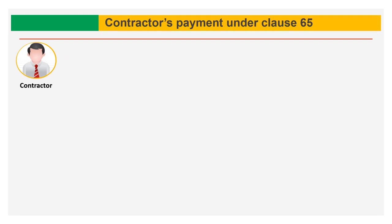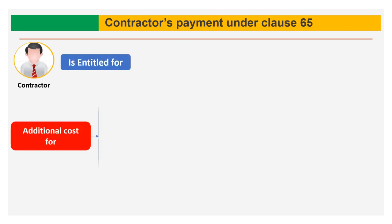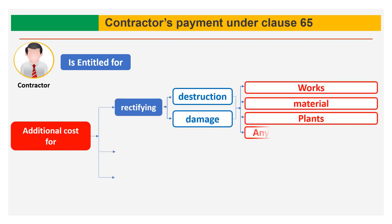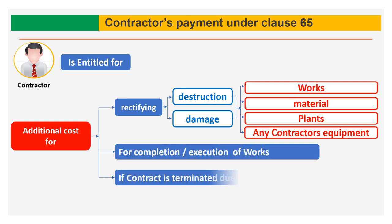In summary, under Clause 65 the contractor is entitled for the following payments: first, for rectifying destruction and damage to works, materials, plants and contractor equipment; second, for completion or execution of works; and third, if the contract is terminated due to an outbreak of war.